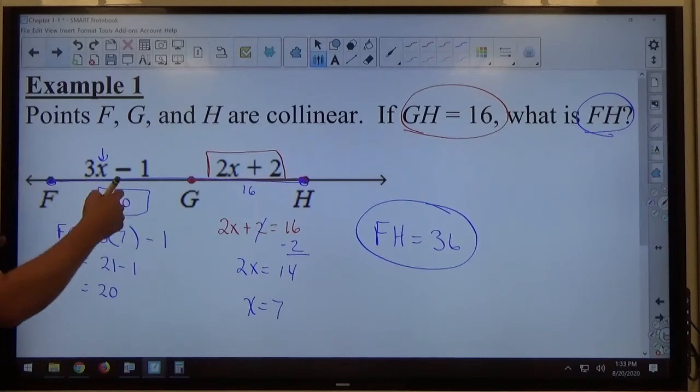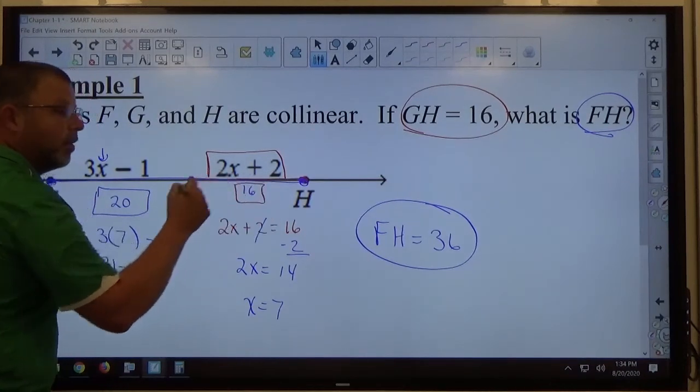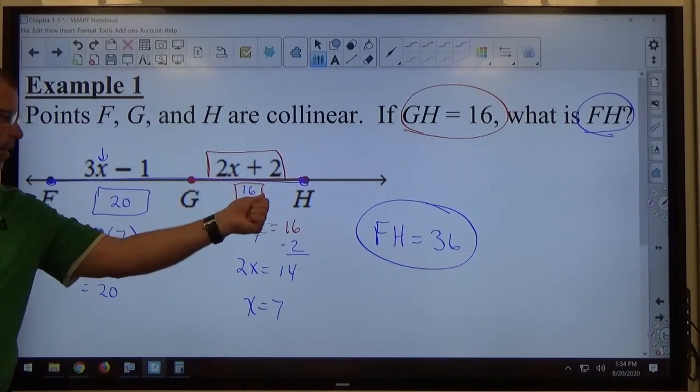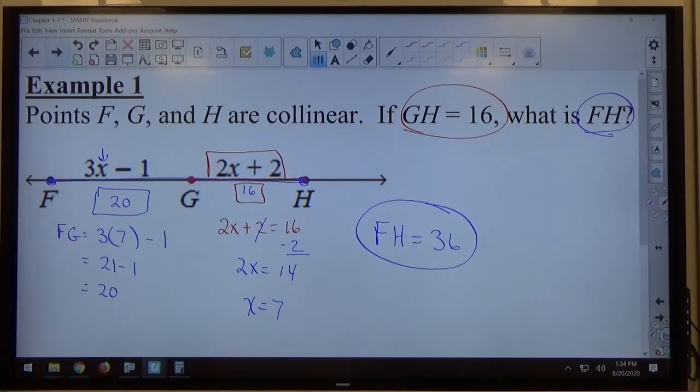So you know, once we know FG is 20, GH is 16, right? So X was found by knowing that, but that length is not 7. So this length is 16, this length is 20, 20 and 16 make 36.